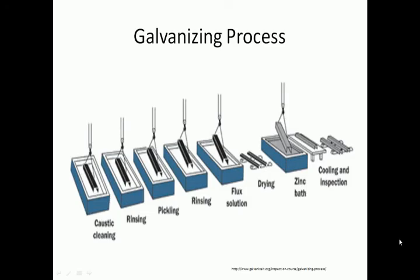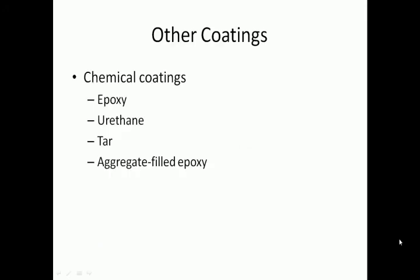Galvanization is the process of coating a steel member with a thin layer of zinc for corrosion protection. This process consists of several chemical baths into which the steel is placed in preparation for being coated in zinc. Other chemical coatings may be used instead of cathodic protection and galvanization. These chemical coatings are made of epoxy, aggregate filled epoxy, urethane, tar, and other combinations of these materials.